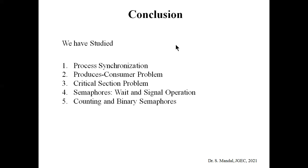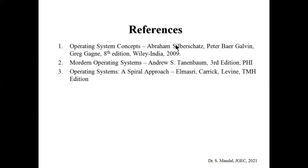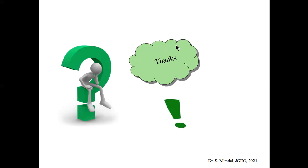In conclusion, in this class we studied process synchronization, the producer-consumer problem, the critical section problem, and the semaphore — defined by wait and signal operations — along with the operating principles of counting and binary semaphores. Thank you; if you have any questions, please post them in the comment section.